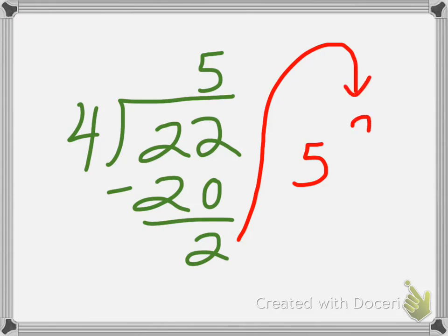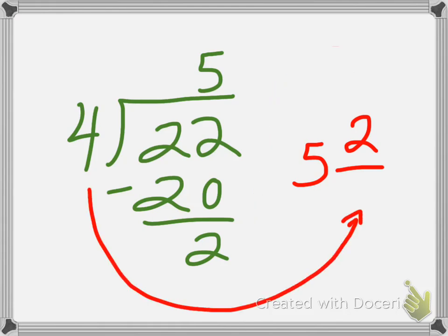And the remainder of 2 becomes the numerator. And then the divisor becomes the denominator.